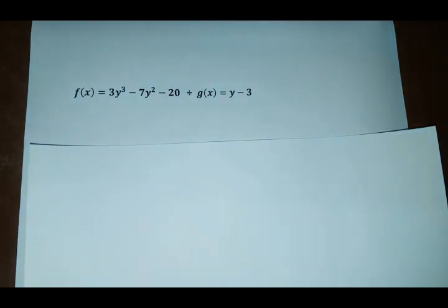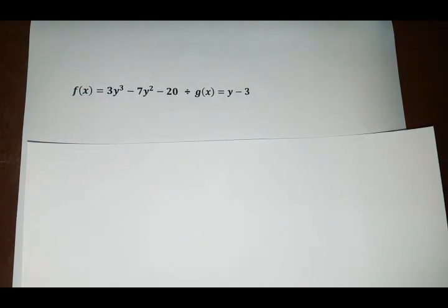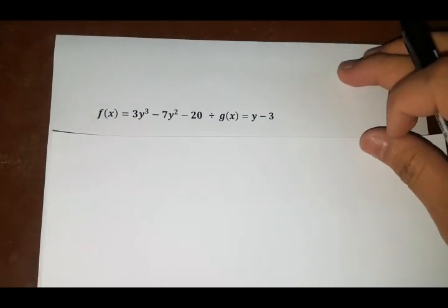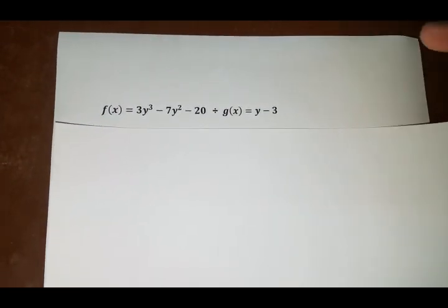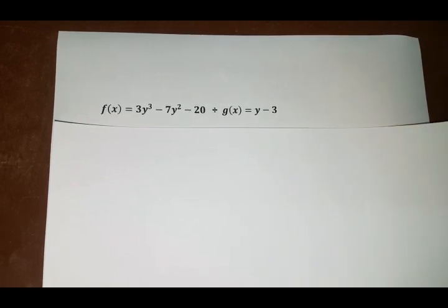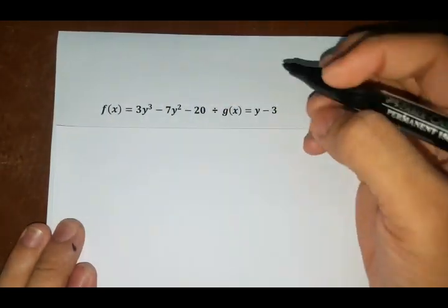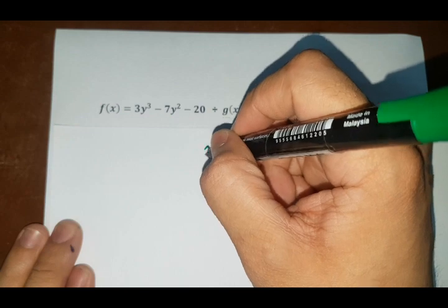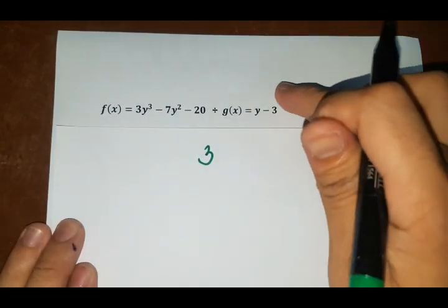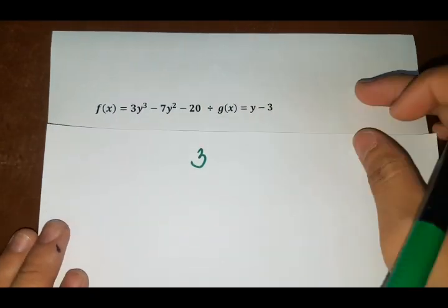Okay. Next example. So we have 3y cubed minus 7y squared minus 20 divided by y minus 3. So how are you going to solve for this? So same thing as we did earlier. So y minus 3, so let's make it faster. So that's 3. Okay, so just get the inverse of this term.